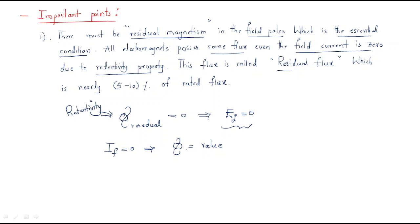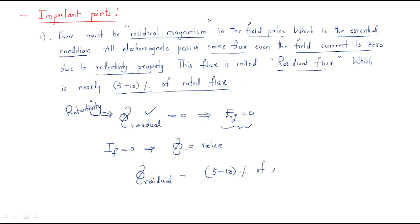This flux is called residual flux, which is nearly five to ten percent of the rated flux. The residual flux must be in the range of five to ten percent of the rated flux — this is an important point about residual magnetism.